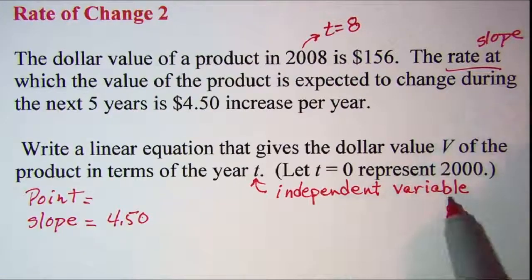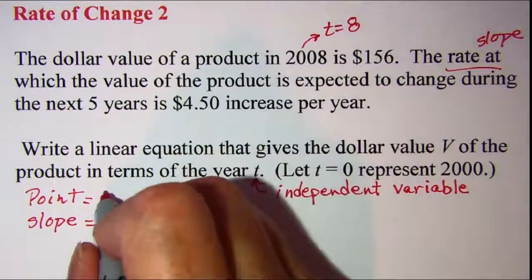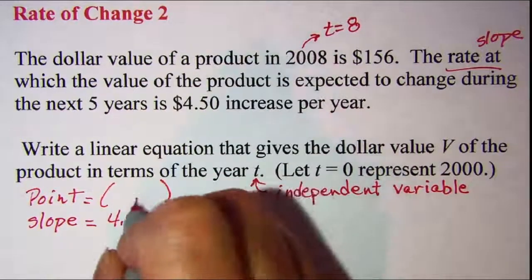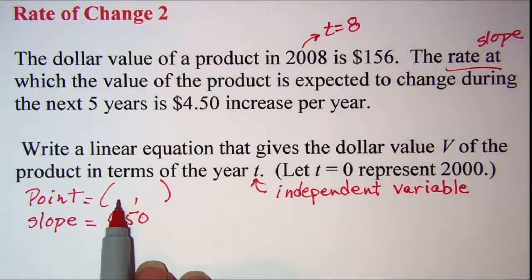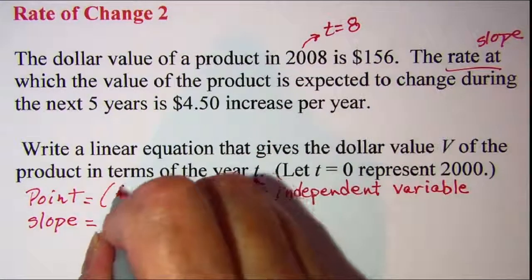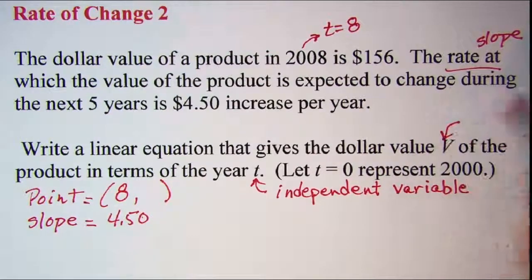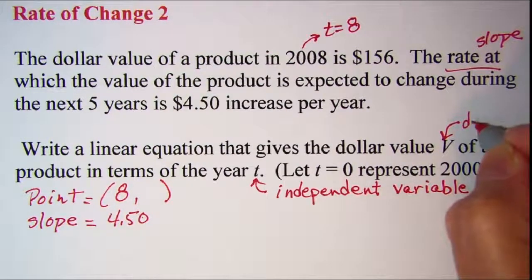So t is our independent variable. That means that's the x, so to speak, in my ordered pair. So my t for this problem is 8, and then the value v is my dependent variable.